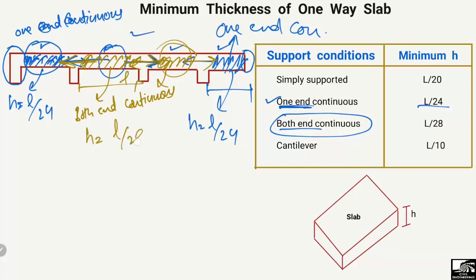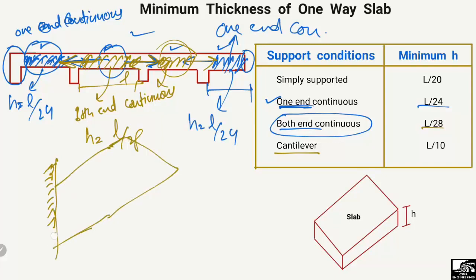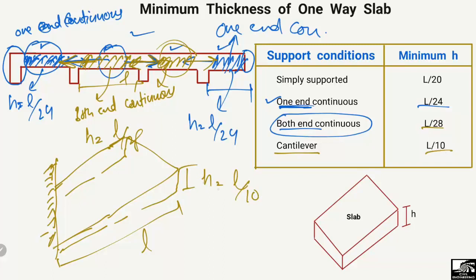The last support condition is the cantilever slab. A cantilever slab is one where one end of the slab is fixed and the other end is free. If L is the length of the slab, the minimum thickness for a cantilever slab will be equal to L/10. So the four cases are: simply supported L/20, one-end continuous L/24, both-ends continuous L/28, and cantilever L/10. Hope you understand — don't forget to subscribe to our channel for daily civil engineering videos. Thank you for watching.